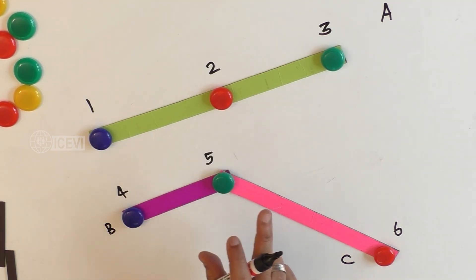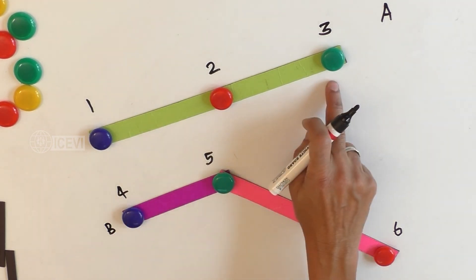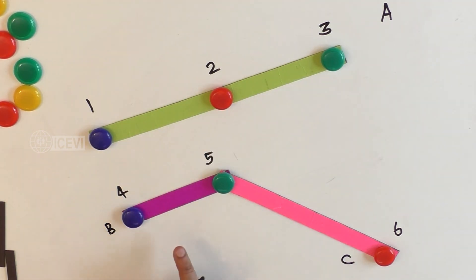If the third point is not on the same line, then the points are called non-collinear points. In the first example, 1, 2, and 3 are collinear points. In the second example, points 4, 5, and 6 are called non-collinear points because they are not lying on the same straight line.